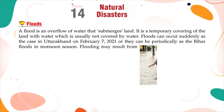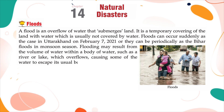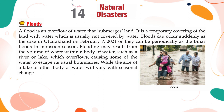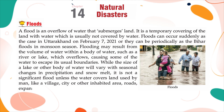Flooding may result from the volume of water within a body of water, such as a river or lake, which overflows causing some of the water to escape its usual boundaries. While the size of a lake or other body of water will vary with seasonal changes in precipitation and snowmelt, it is not a significant flood unless the water covers land used by people, like a village, city or other inhabited area, roads, expanses of farmland, etc.